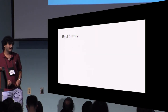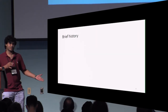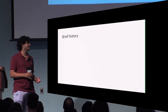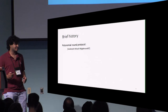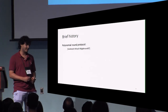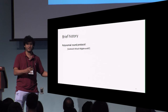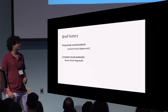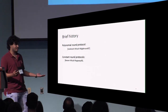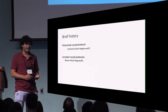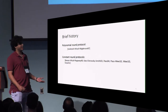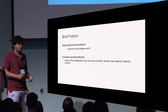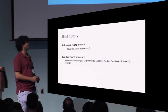Let me briefly take you through the history of works addressing round complexity in MPC. This starts with work by Micali and Wigderson, which showed a polynomial-round construction. We want to do better, and the study of constant-round protocols was started by Beaver, Micali, and Rogaway, followed by a sequence of works using various assumptions to construct constant-round protocols.